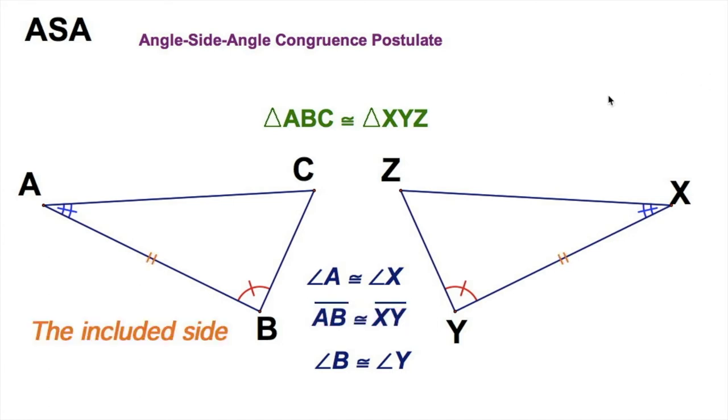And here we go with the included side. Oh, yeah. That means the side that's in between the two pairs. In this case, the red angles and the blue angles. And that's sufficient to prove two triangles congruent. So make sure, again, you're getting this in your notes.